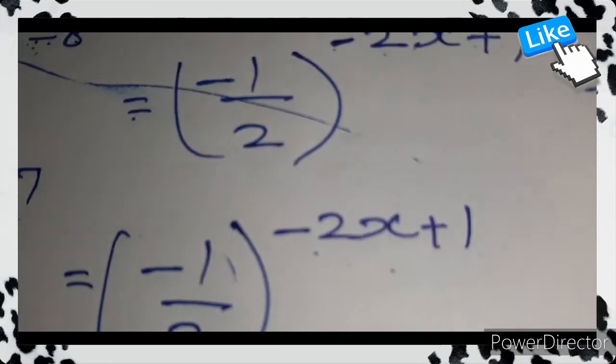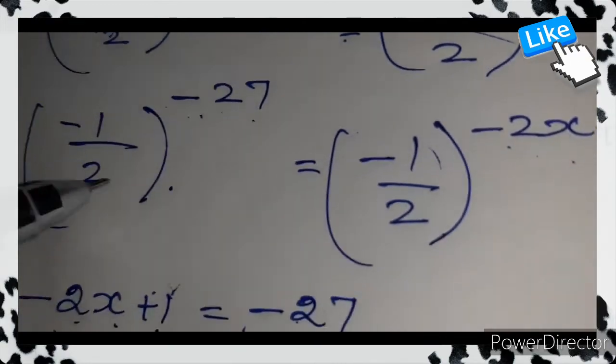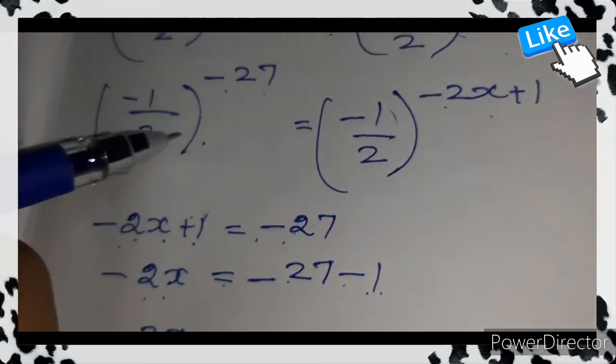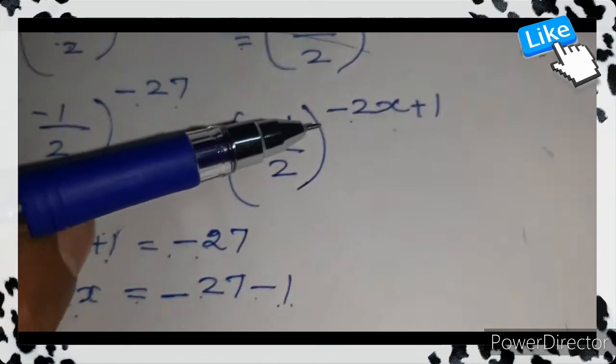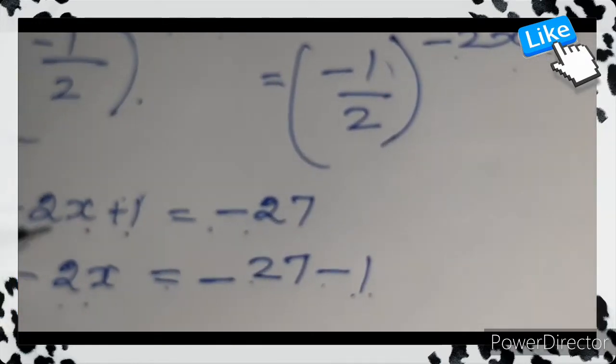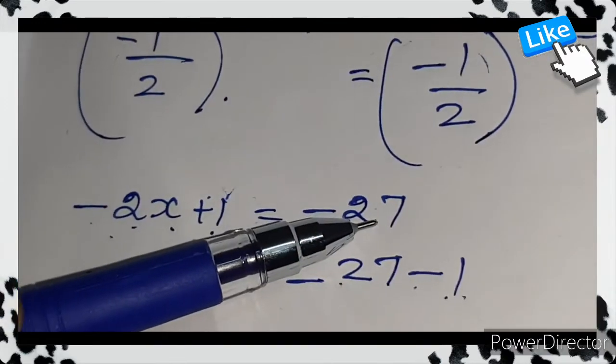Now, the base is equal on both sides, so we equate the powers from both sides. What we get is -2x+1 = -27.